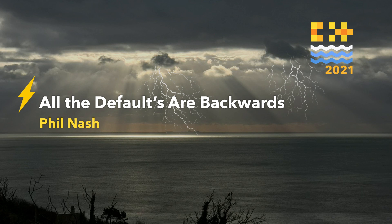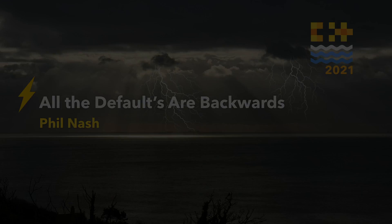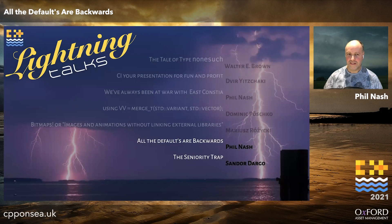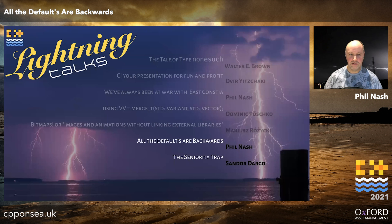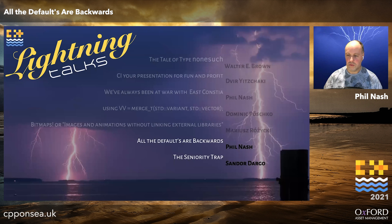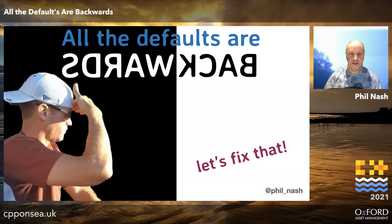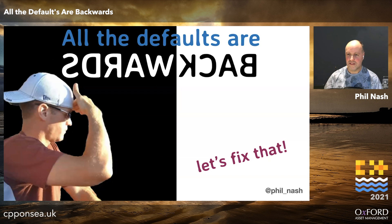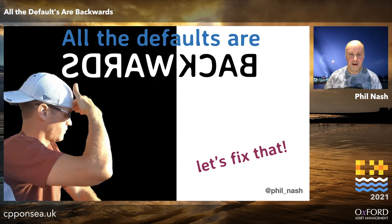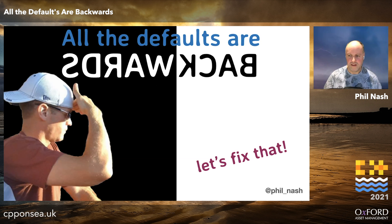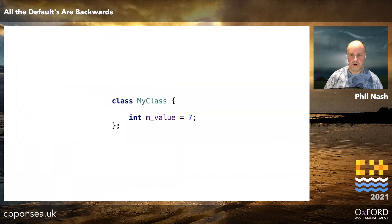Let's have a look at who our next speaker is — it's me again. So, all the defaults are backwards. This is actually connected to my previous talk, so we'll get to see why in just a moment. All the defaults are backwards — you probably recognize this expression when talking about C++. We're always hearing this, but what do we really mean by it, and how can we fix it?